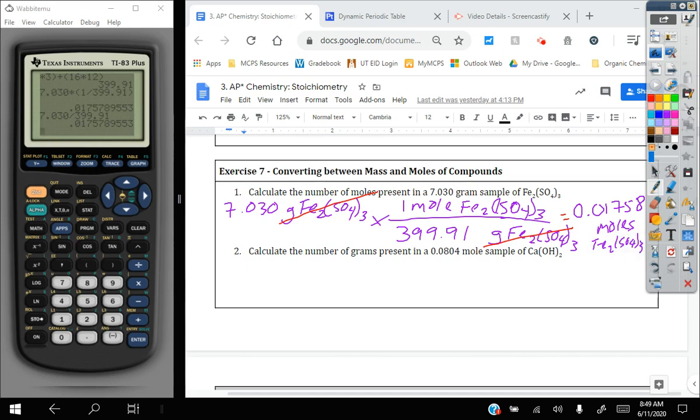If we're going the opposite direction, number of grams, same deal. 0.0804 moles of calcium hydroxide. This time, I want moles on the bottom.